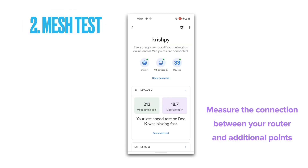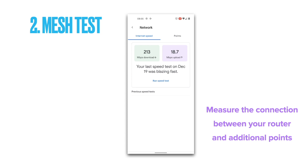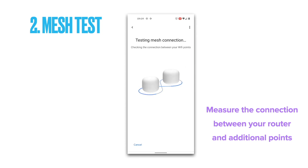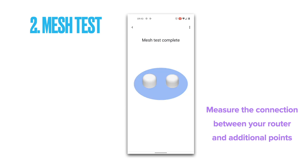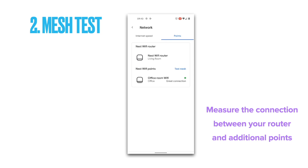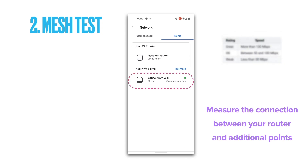Number two on our list is the mesh test. If you have multiple Wi-Fi devices such as a Wi-Fi router and a Wi-Fi point, you can use this test to measure the strength of the connection between these devices. This is very useful to confirm the optimal placement of your Nest Wi-Fi points to increase coverage across your home while keeping Wi-Fi reliable and fast everywhere. The strength of the connection depends on factors such as distance between devices, type of walls in between them, and the height at which they are placed. Once your mesh test is concluded, one of three ratings will appear.